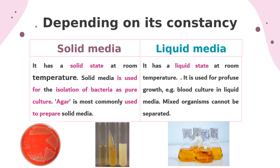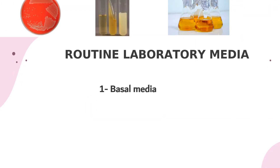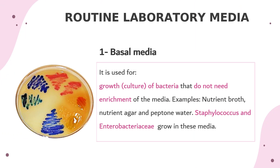Liquid media have a liquid state at room temperature and are used for profuse growth, such as blood culture. In liquid media, mixed organisms cannot be separated. The second type of nutrient media is routine laboratory media, which includes six types. The first is basal media, used for growth of bacteria that don't need any enrichment, such as nutrient agar and peptone water. Staphylococcus and Enterobacteriaceae grow well in these media.